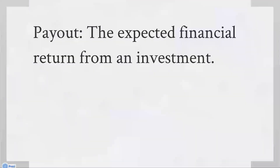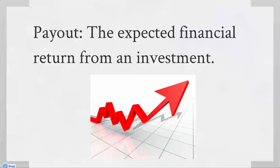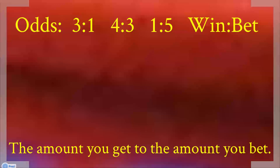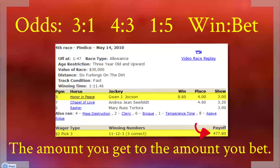First, the simple definition of a payout is the expected financial return of an investment — pretty much what we were talking about before, although blackjack isn't much of an investment. Odds can also express payout — expressed as 3 to 1, 4 to 3, 1 to 5. When we talk about odds and payouts, we're looking at the amount we win compared to the amount we bet: win to bet. The catchy saying I came up with is 'the amount you get to the amount you bet.' Looking at this scorecard for a horse race, we can see different payouts for different bets.